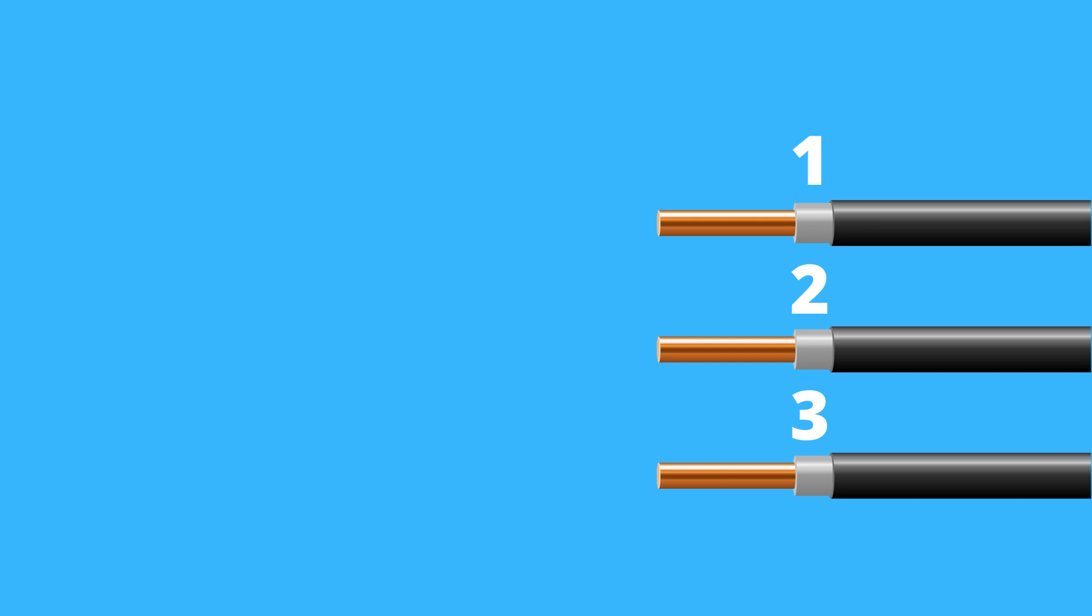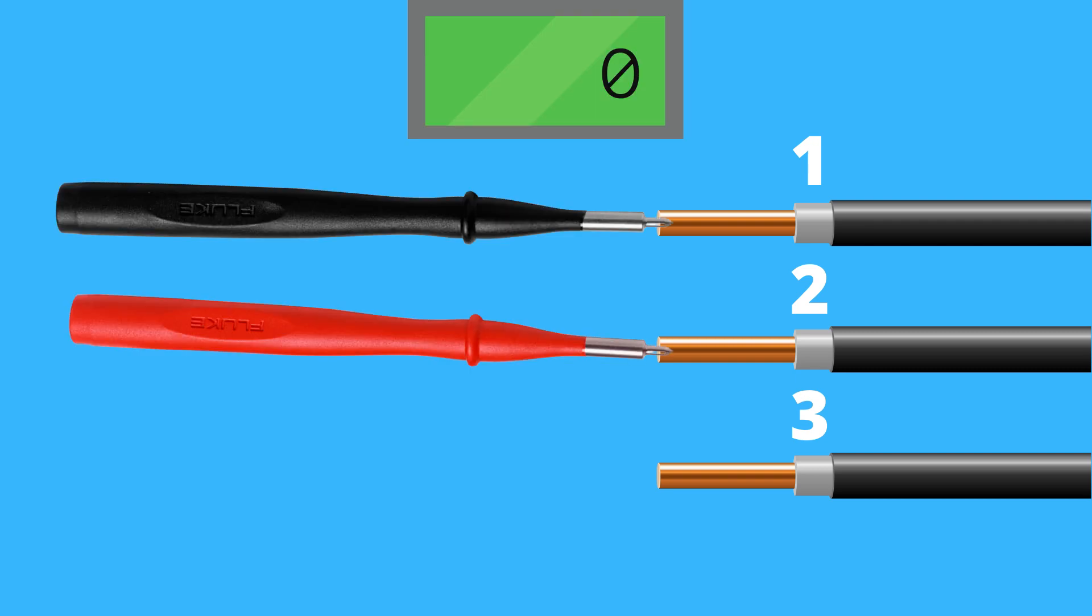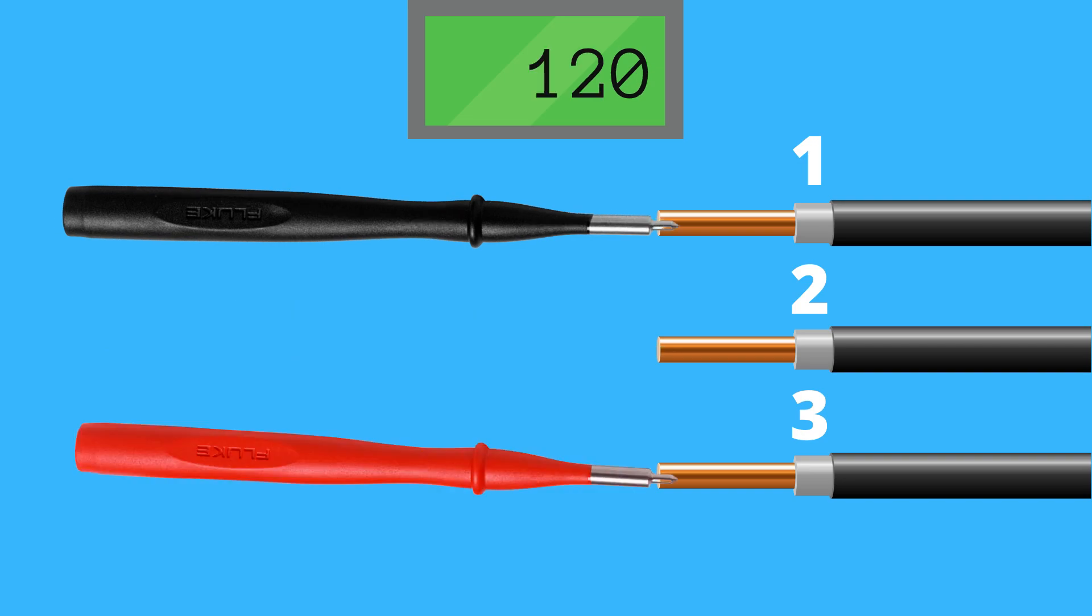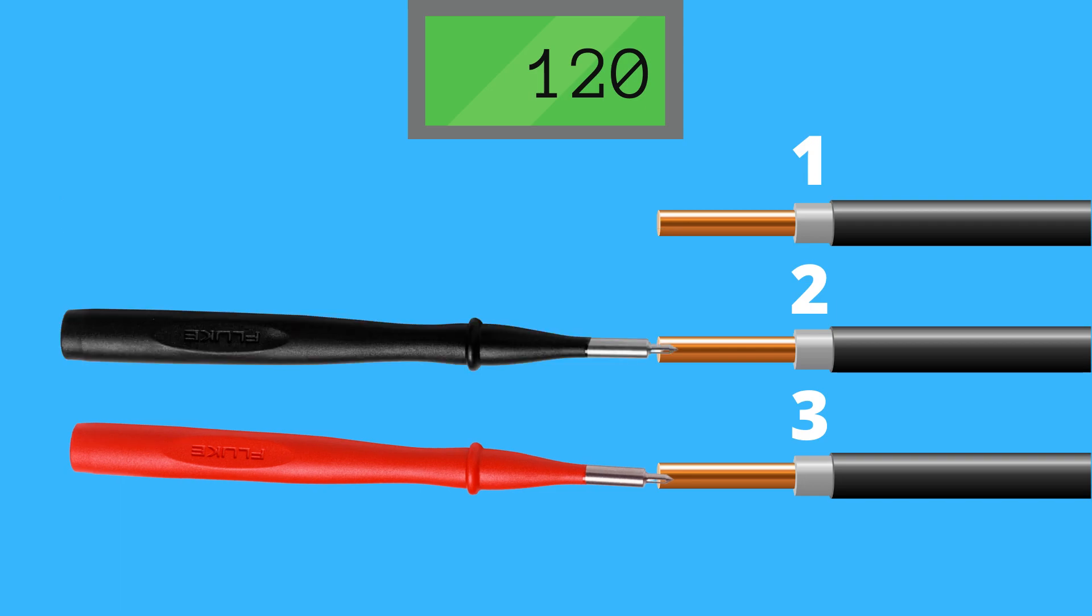Mark the wires with numbers or colors. Then measure the voltage on the first two wires. If you get a result of zero volts, you found a neutral and ground wire. Now move on to measuring the third wire. If you get a result of 120 volts or 240 volts if you live in Europe, you found a hot wire.